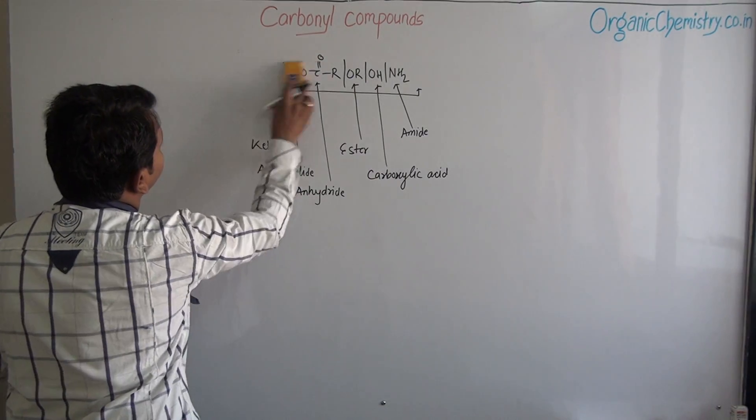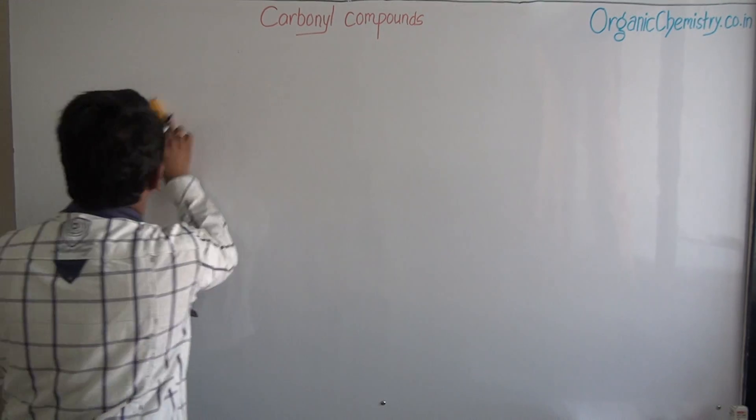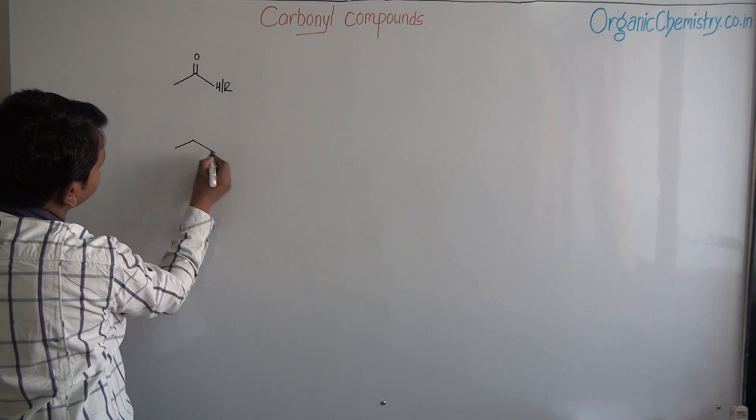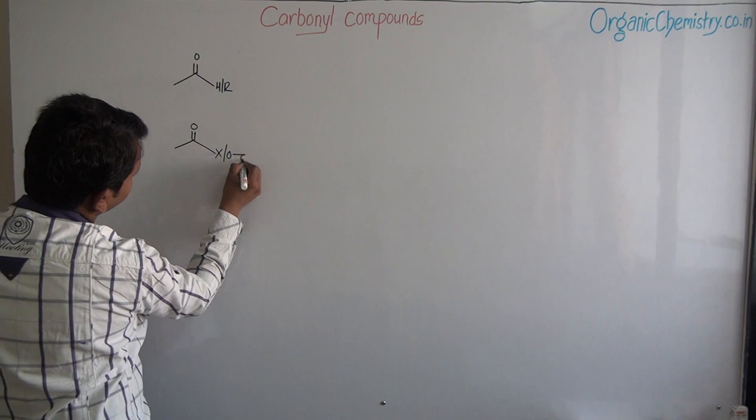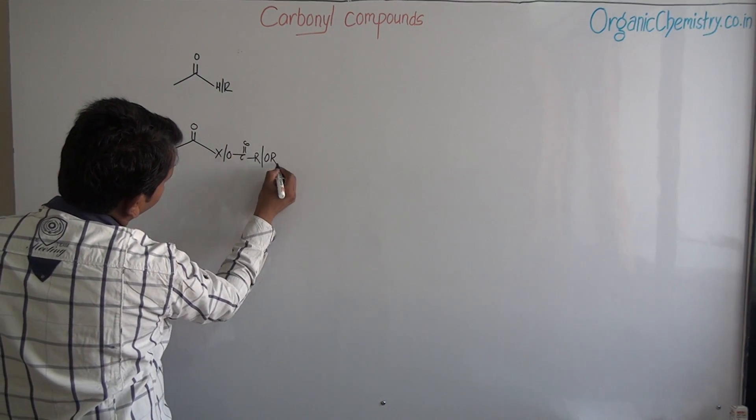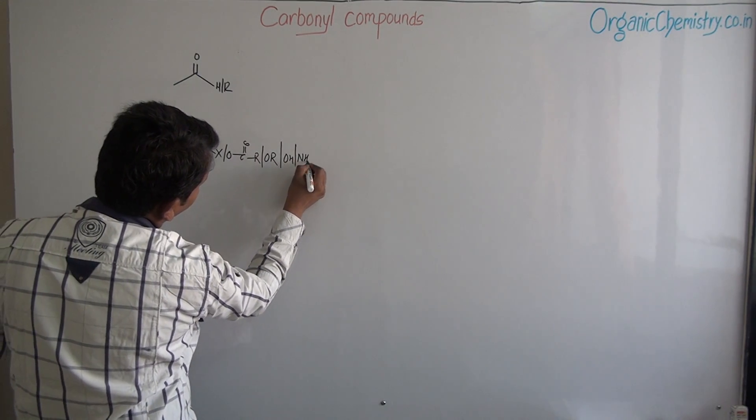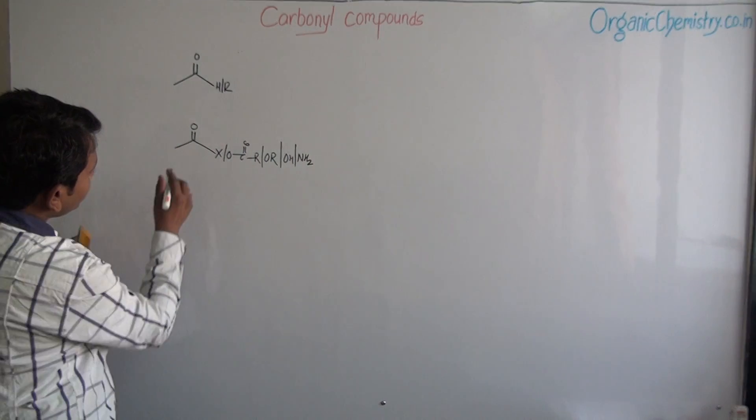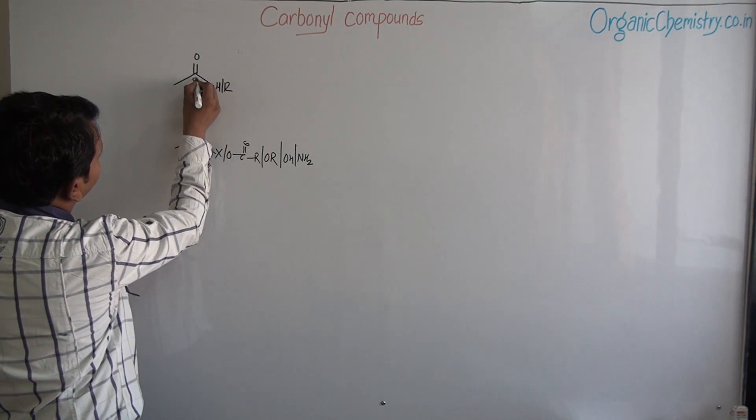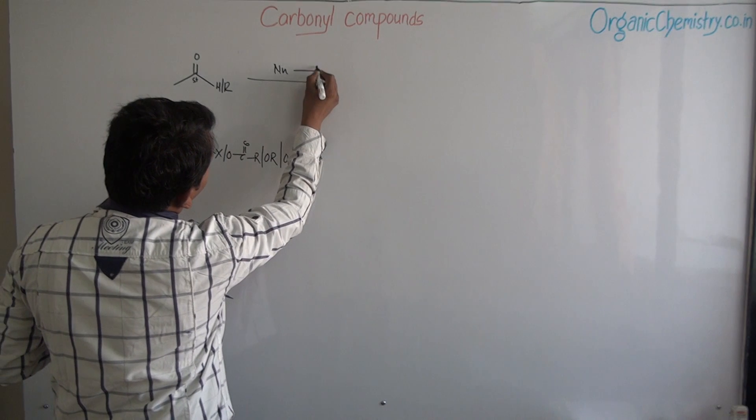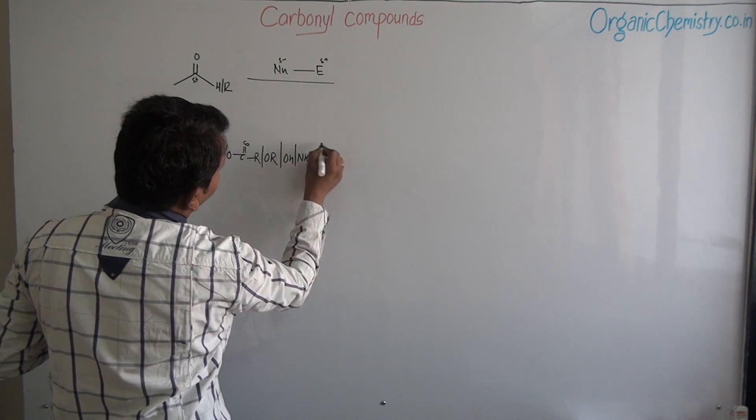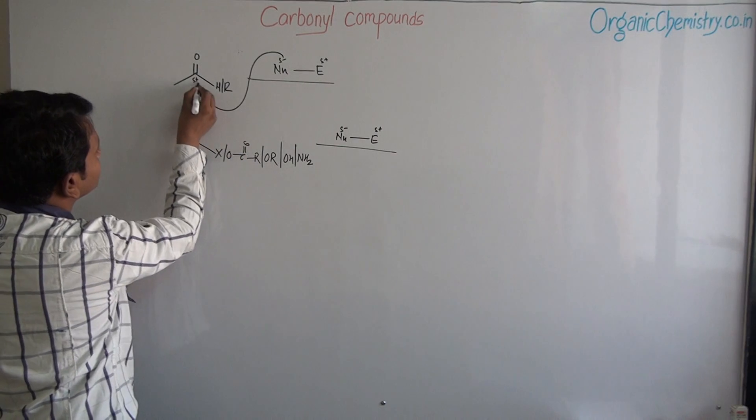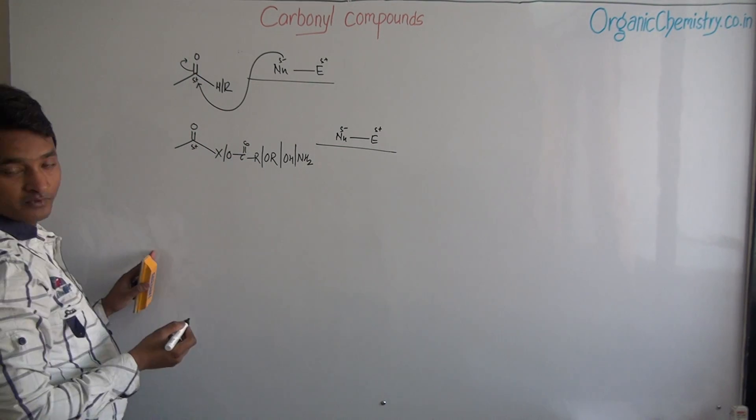When we carefully analyze the chemical reactions of carbonyl compounds, may be aldehyde or ketones or acetylide, anhydride, ester, carboxylic acid or amide, due to electronegativity difference between carbon and oxygen, carbon acquires partial positive charge. In most cases, so any electron-rich species, that is the nucleophile, will attack easily over this particular partial positive charge and break this pi bond.